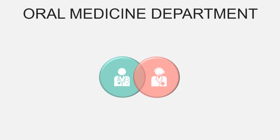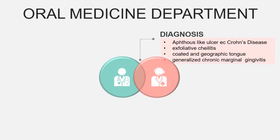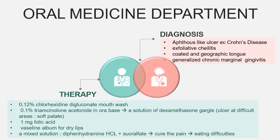At the Oral Medicine Department, he was diagnosed with aphthous-like ulcer due to Crohn's disease, exfoliative cheilitis, coated and geographic tongue, and generalized chronic marginal gingivitis. He was treated with 0.12% chlorhexidine gluconate mouthwash, 0.1% triamcinolone acetonide in orabase — replaced with dexamethasone gargle solution for ulcers in difficult areas such as the soft palate — 1mg folic acid, Vaseline for dry lips, and a mixed solution of diphenhydramine HCl and sucralfate to relieve pain causing eating difficulties.